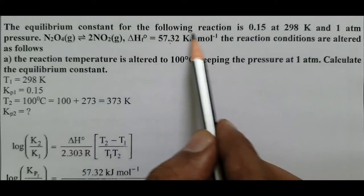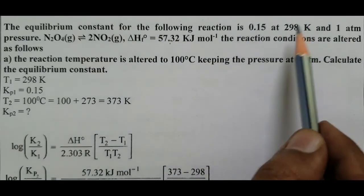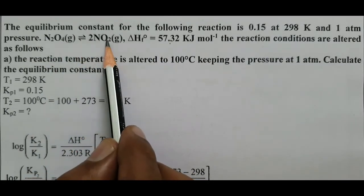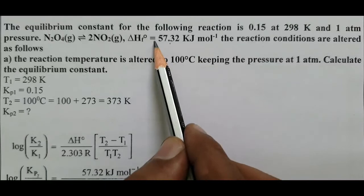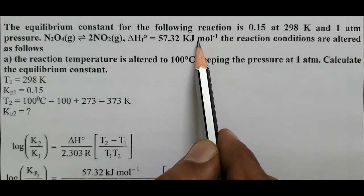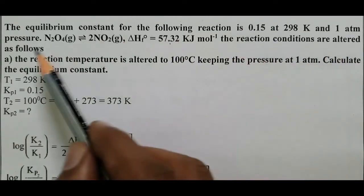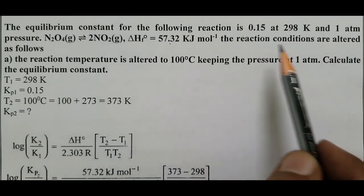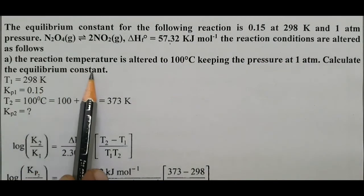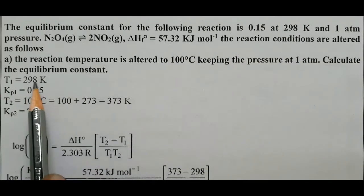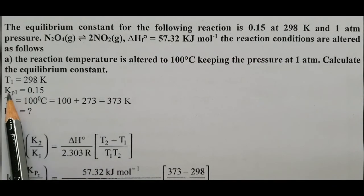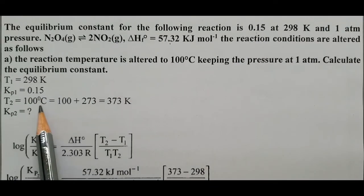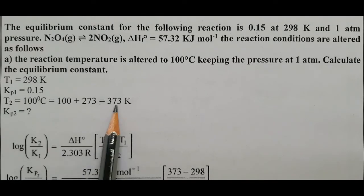Problem 5: The equilibrium constant for N₂O₄ ⇌ 2NO₂ is Kp₁ = 0.15 at T₁ = 298 K, with ΔH° = 57.32 kJ mol⁻¹. The temperature is changed to 100°C (T₂ = 373 K) at constant pressure of 1 atm. Calculate the new equilibrium constant Kp₂.